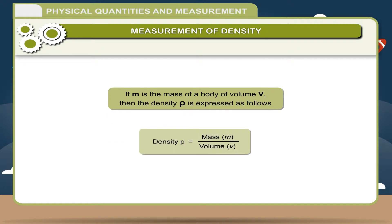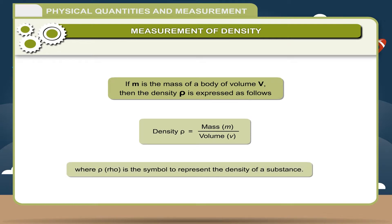Formula: If m is the mass of a body of volume v, then the density ρ is expressed as follows: density ρ = m/v, where ρ is the symbol to represent the density of a substance.